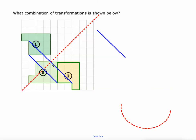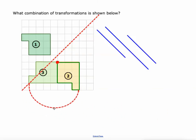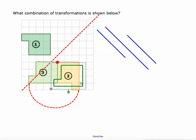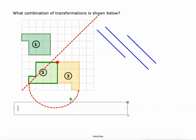Then I'm looking at a rotation around a specific point — that point right there is going to be our center of rotation. If we rotate around this point in a circular fashion, an arc, it'll end up matching figure three. So our answer to this one is a reflection then rotation.